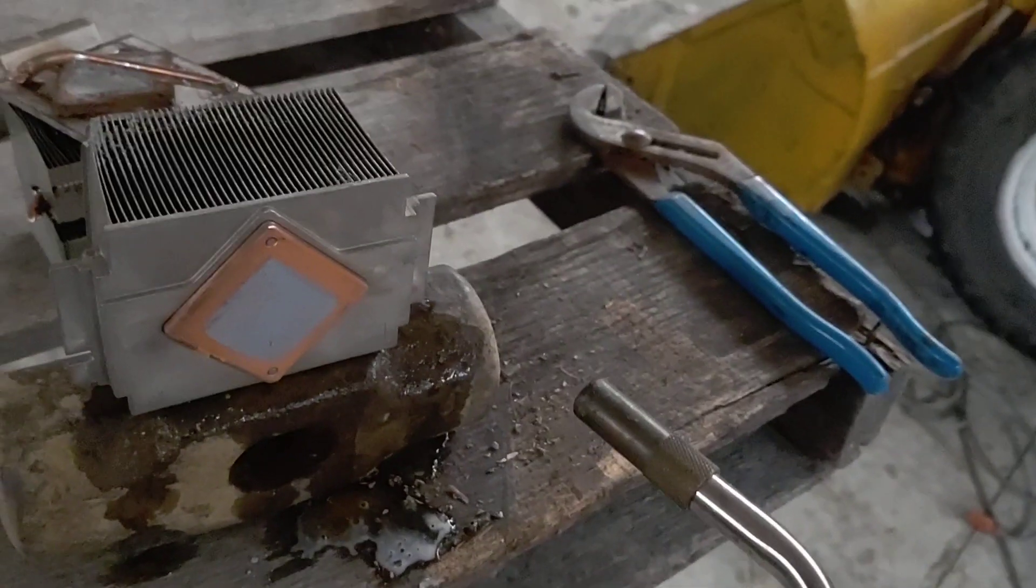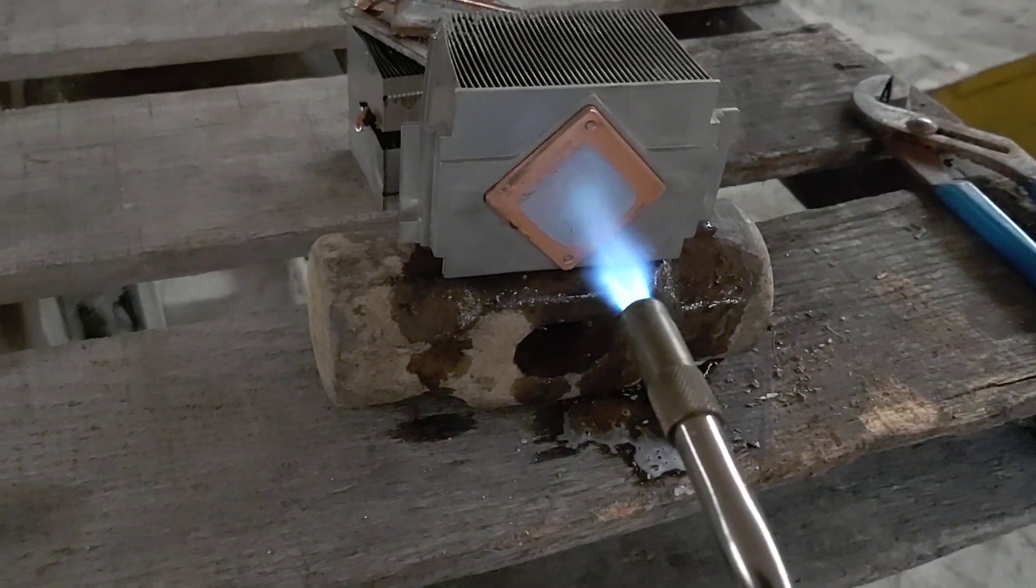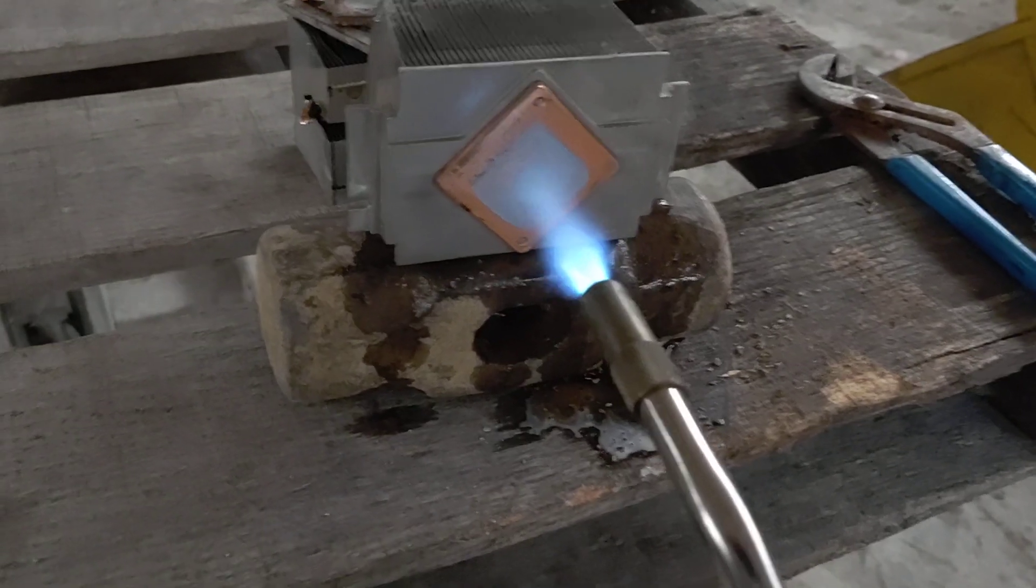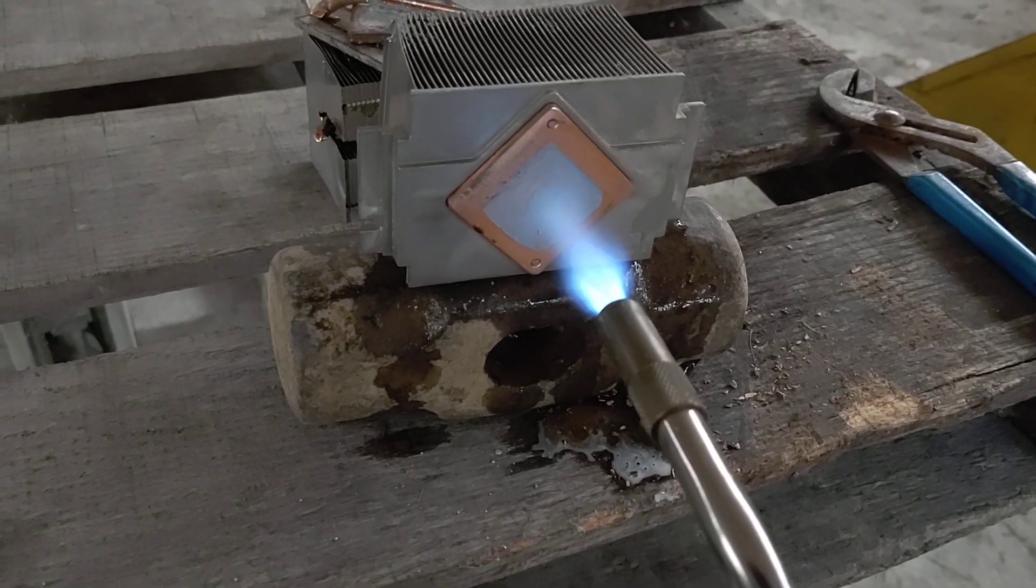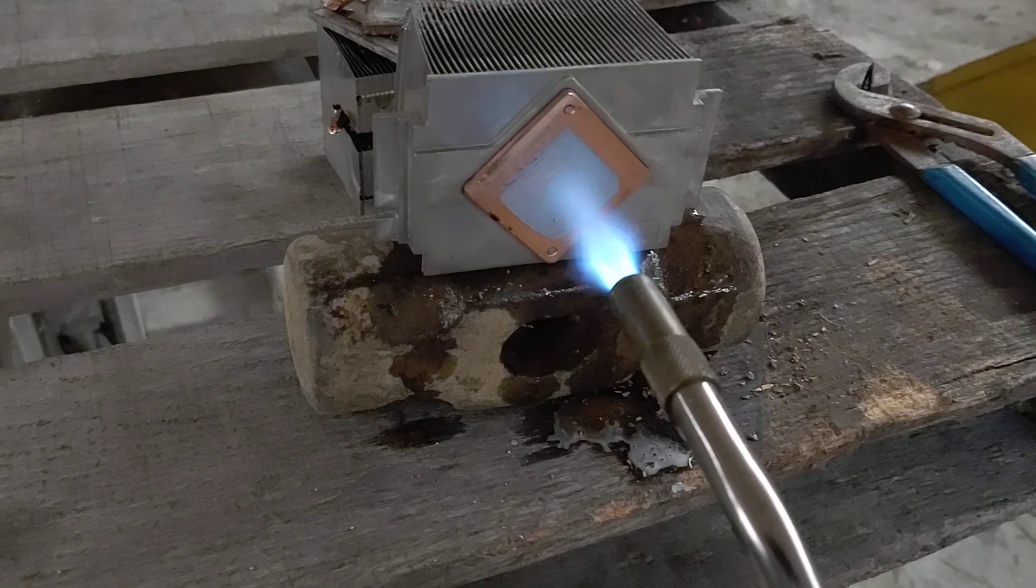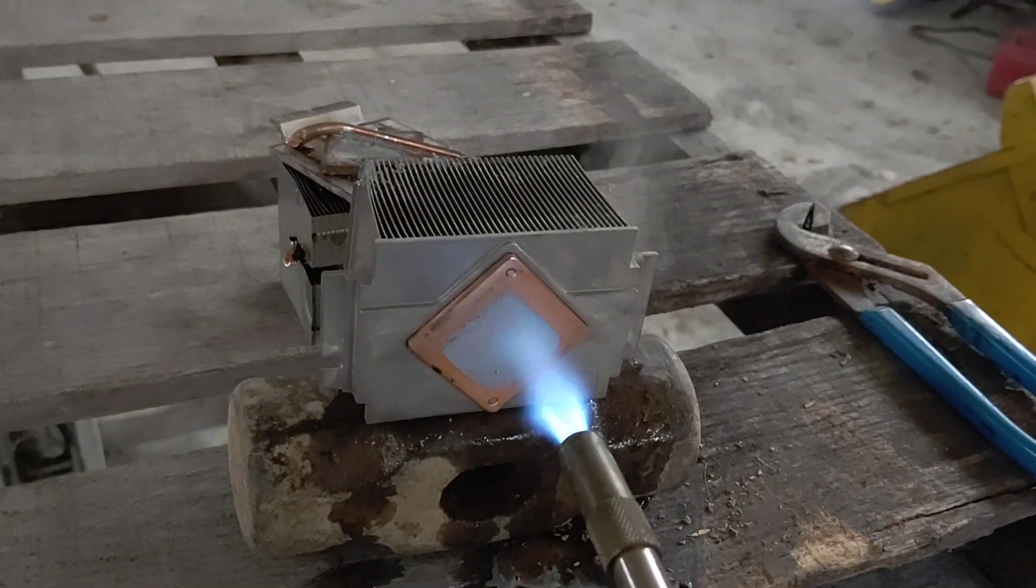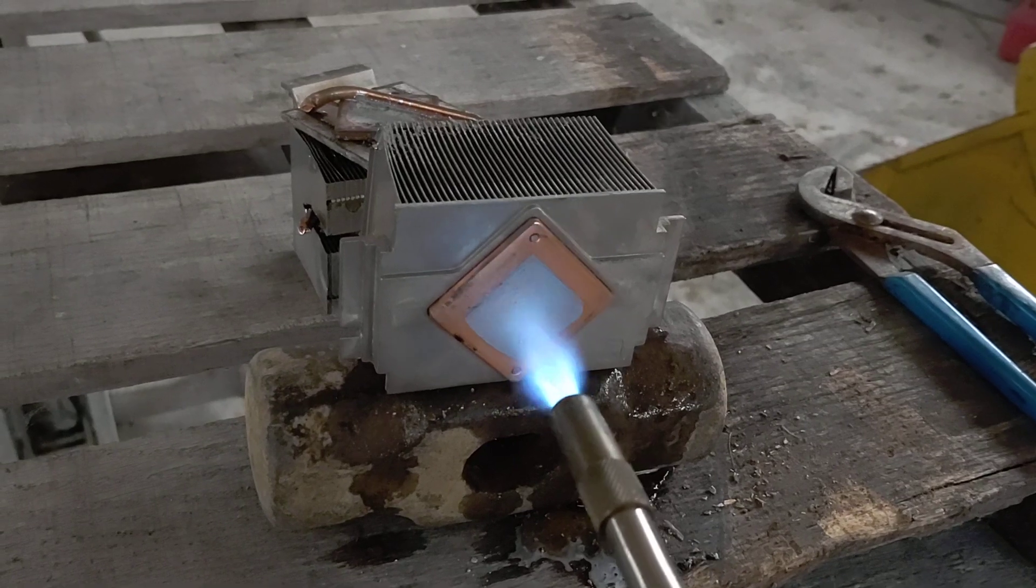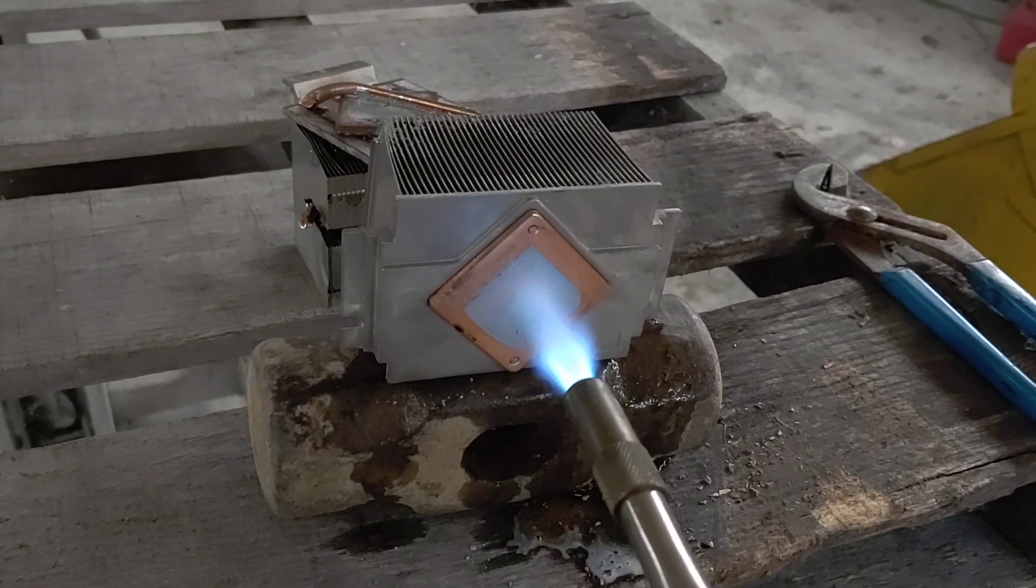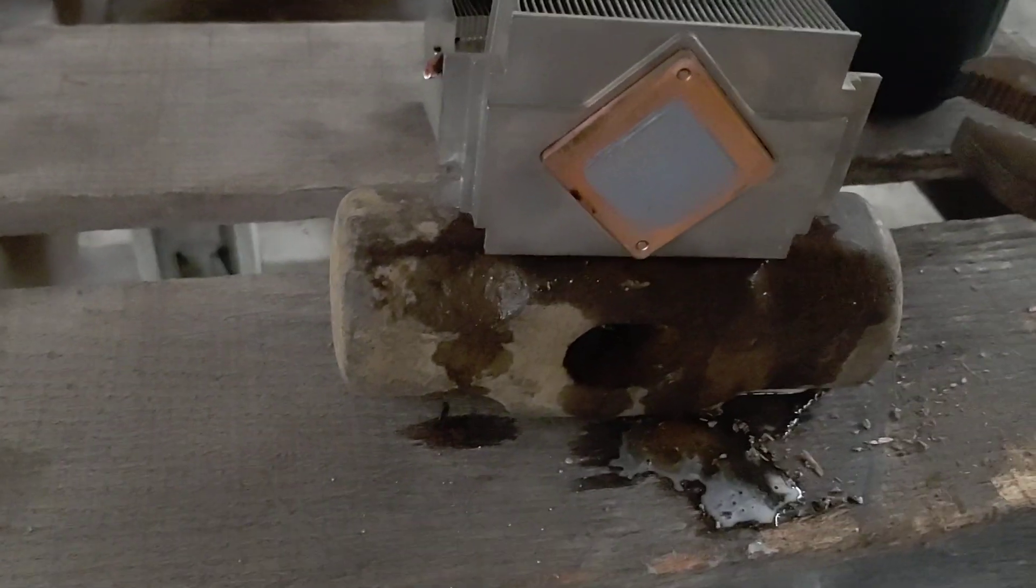So to start with, I just got a regular torch. I'm using propane because I don't have any nap gas. And we're just going to heat the center puck. Now it's going to get nice and warm. Start smoking here in good shape.